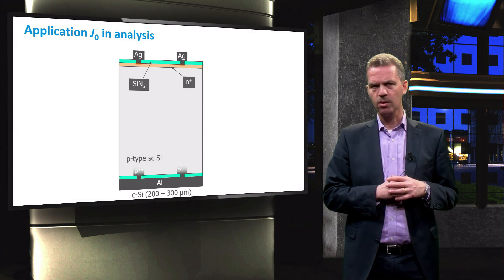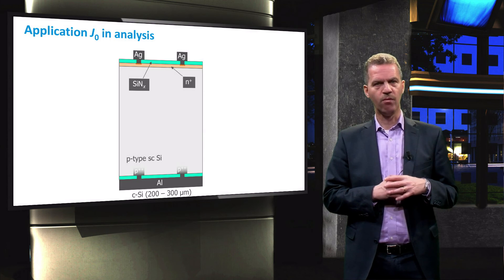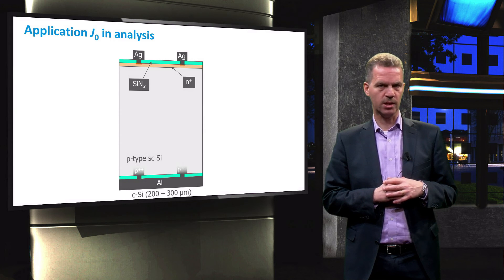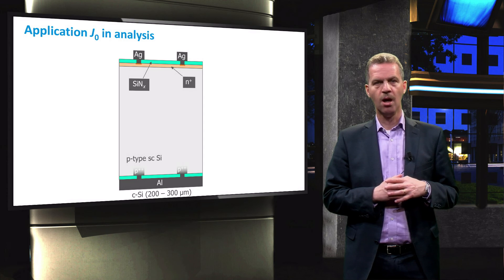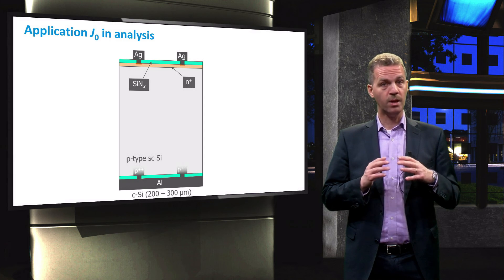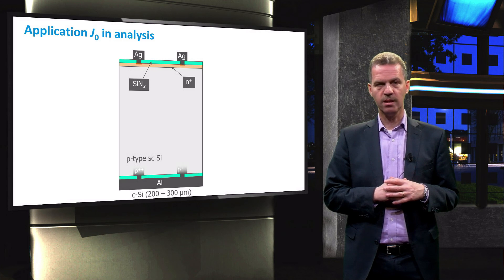Now I will briefly point out how the concept of J0 is applied to a solar cell, and for that we look at this cross-section. Anywhere in the solar cell, the recombination processes are active, but we can pinpoint several places with an associated J0.